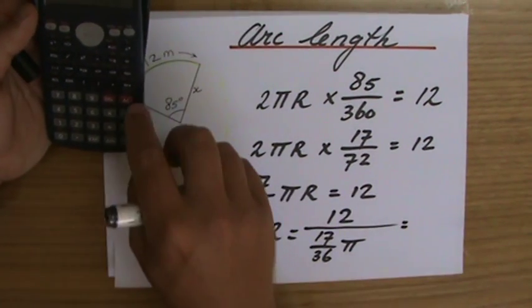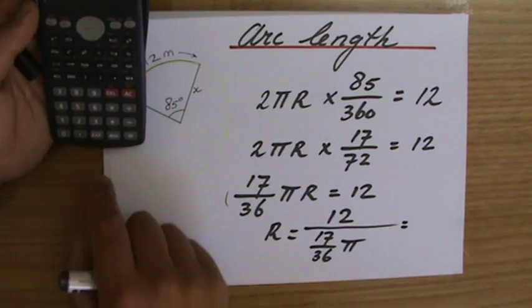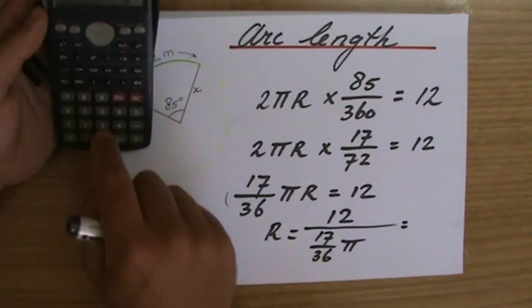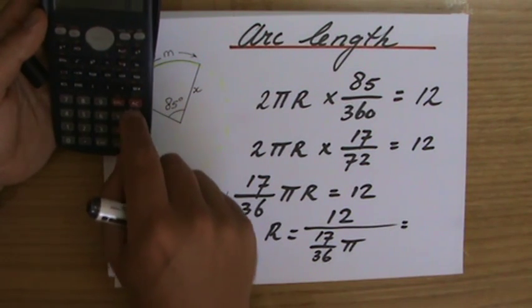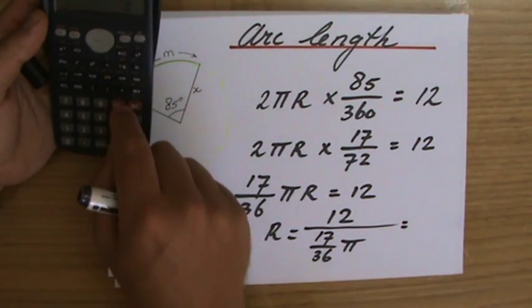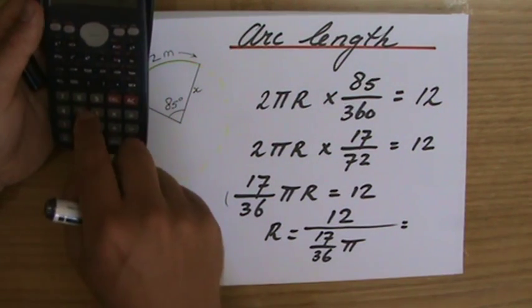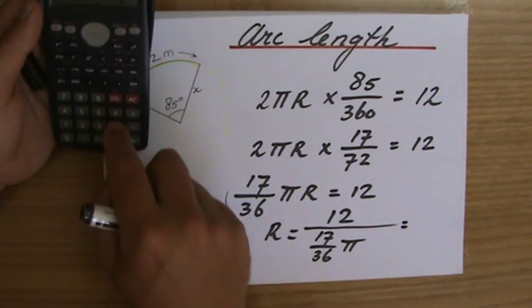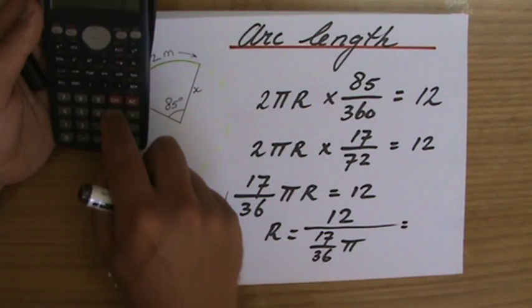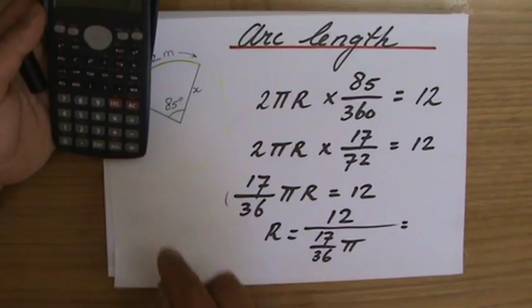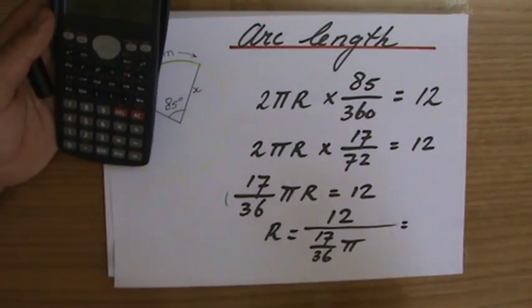Equals. So my calculator, 12 divided by, let's put some brackets there, 17 over 36. And I should do that properly. So let me start over. 17 over 36 times pi, yeah? So make sure that pi is in the denominator. Equals.